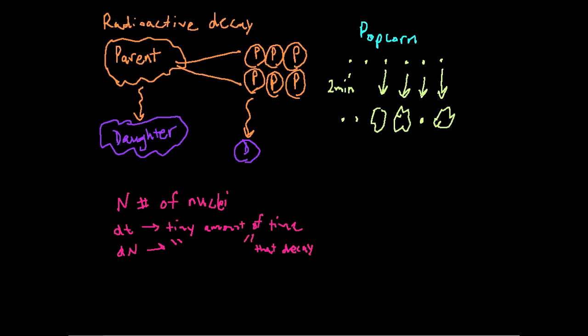How many of the parents that we're losing that are decaying into the daughter atoms. And we can make a proportionality. We can say that negative dn, and you say, why negative? Well, it's negative because those are the ones we're losing, the tiny amount that we're losing, so negative since we're losing them. That's proportional. How many we're losing is going to be proportional to how many we started with, this n, how many we have total, and how much time, dt.